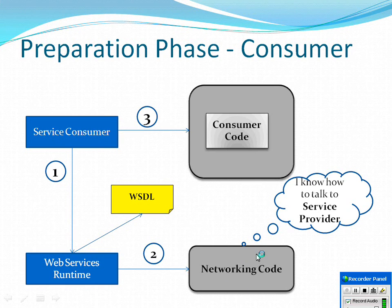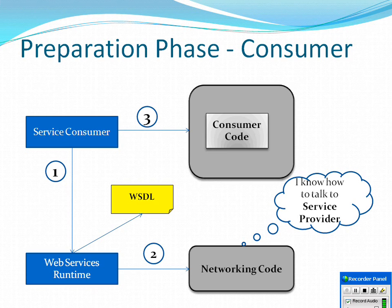Once the consumer has generated the stub, the next step is writing the consumer code, which is the invocation of the service method. By the end of the preparation phase, the client has a stub, and the server or producer has a skeleton, so both can interact with each other. The client invokes a proxy service method, and the networking code on the client side makes a network call to the service provider.